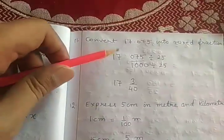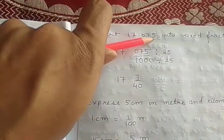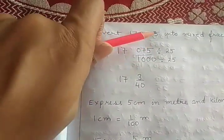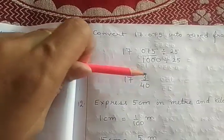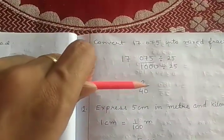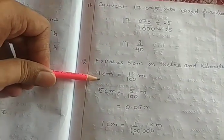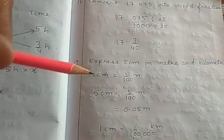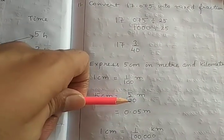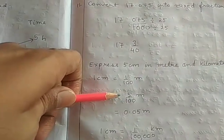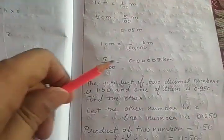Convert a decimal number into a mixed fraction: the decimal part you don't touch. From where the decimal is — it is on the thousandths — so it is divided by 1000. Simplify both into simpler form: divide by 25. Since it can't be further divided, this part will be the mixed fraction form. Similarly, express 5 centimeters into meters and kilometers using the conversion chart.